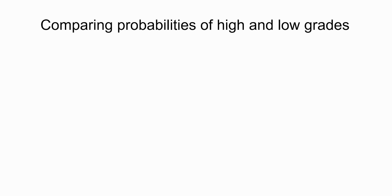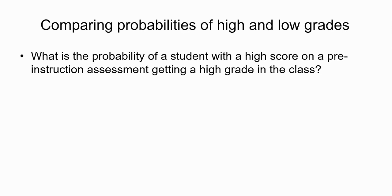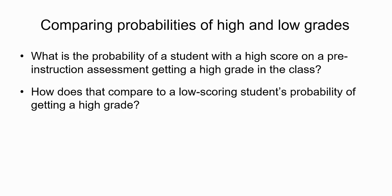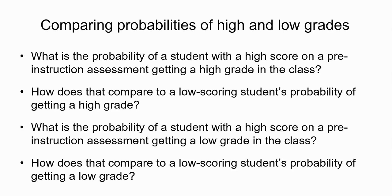Here's the key question: a student who scored in the top quartile on one of the diagnostic pretests — what is the probability that student will get a top quartile grade in their class? Compare that to a student who scored in the bottom quartile on the diagnostic pretest — what's their probability of getting a high grade in the course? And the converse: what about low grades?